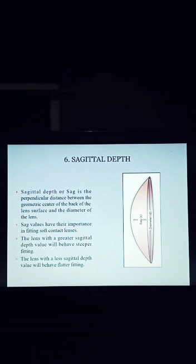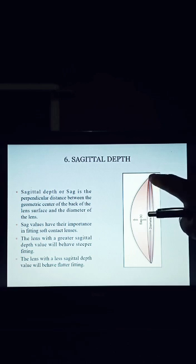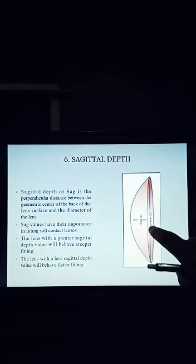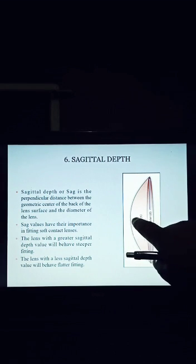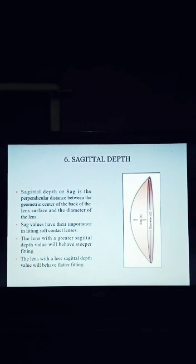Number 6: Sagittal depth. Sagittal depth is the perpendicular distance between the geometric center of the back of the lens surface and the diameter of the lens — meaning from the total diameter to the bottom of the contact lens. Sagittal depth values have importance in fitting soft contact lenses. A lens with a greater sagittal depth will behave as a steeper fitting, and if sagittal depth is less, it will be a flatter fitting.